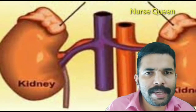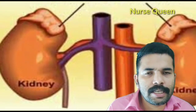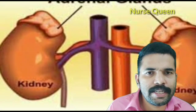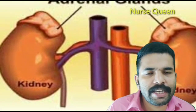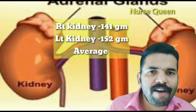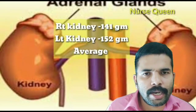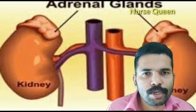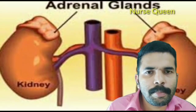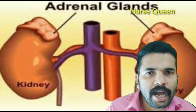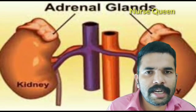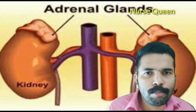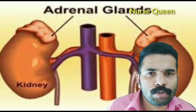The weight of the adrenal gland is one-third of the kidney. The right kidney has an average weight of 141 grams and the left kidney averages 152 grams. At birth, kidney weight is 20 to 35 grams. These are some of the key facts that can be asked about the adrenal gland and thyroid gland.